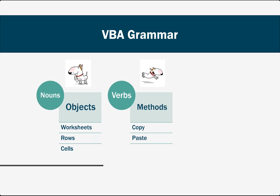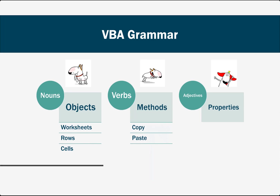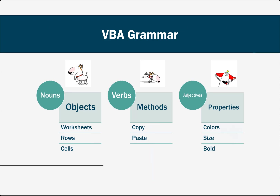We are also really commonly going to use adjectives, or what we call properties. If we were referring to font, for example, we might use these terms to define the font's color, size, or whether it's bold or italic.